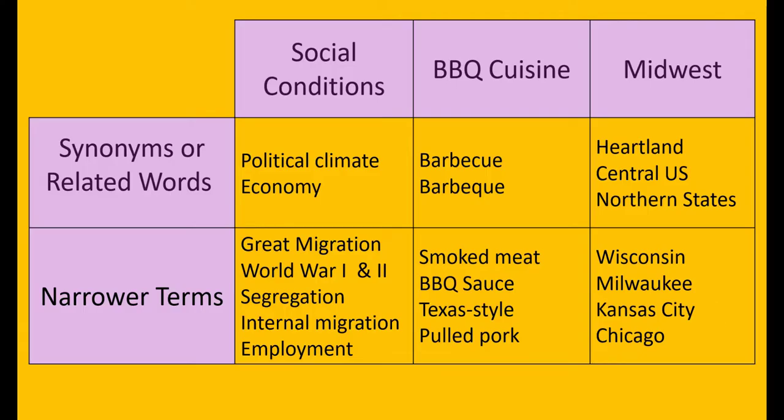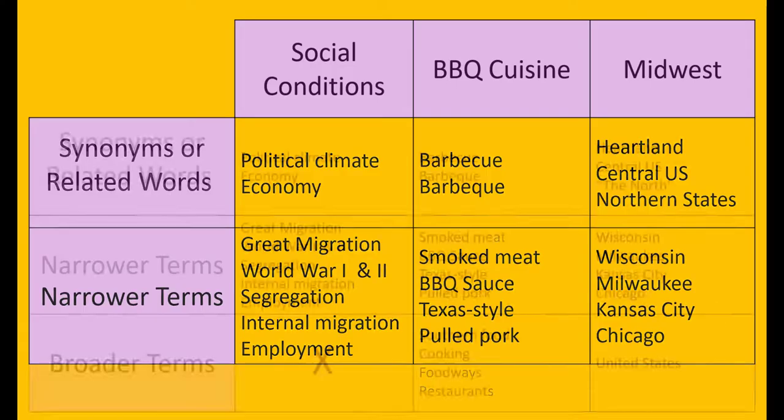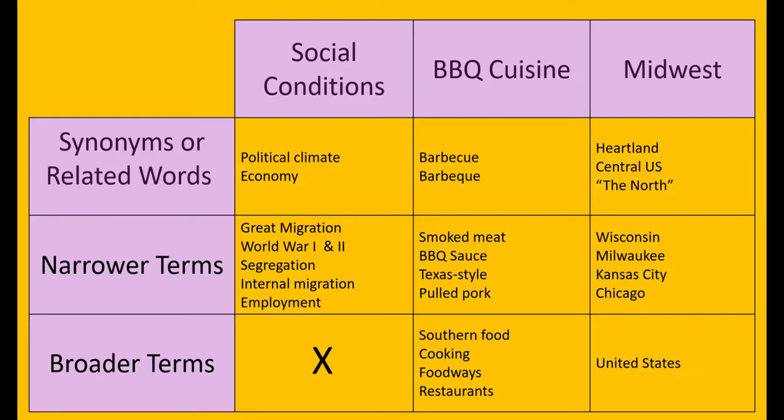Next, zoom out and consider words and phrases that are more general than the keywords you started with. These are called broader terms. For my topic, this could look like adding terms such as southern food and the United States.